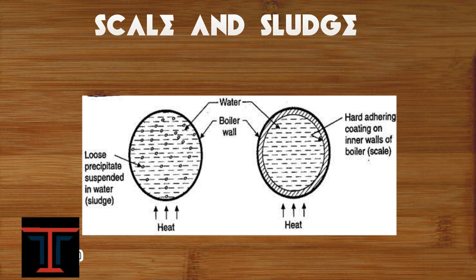When bicarbonates lose their precipitates and suspend in the water, it forms sludge. When sulfates lose their precipitates and form hard adhering coating on inner walls of the boiler, it forms scale. The only difference is scale is sticky and sludge is loosely held to the boiler.